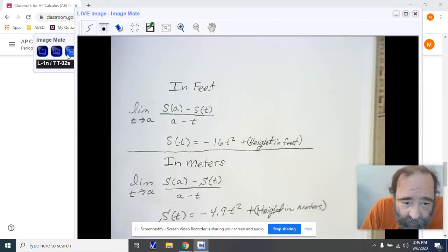In feet, we have the limit as t approaches a for s(a) minus s(t) over a minus t. Notice that's a slope formula, y2 minus y1 over x2 minus x1.